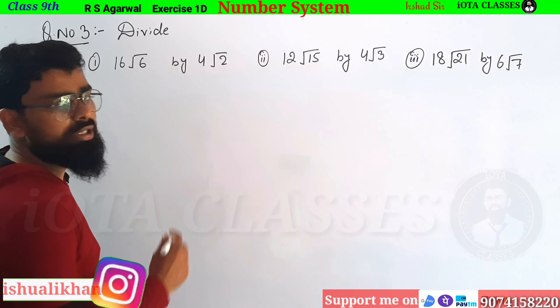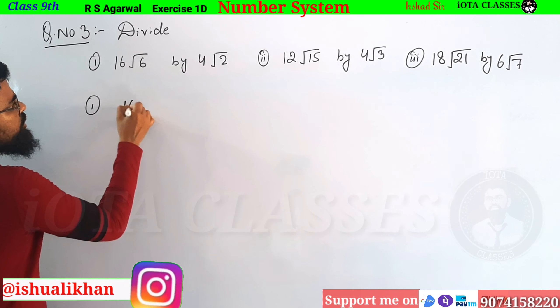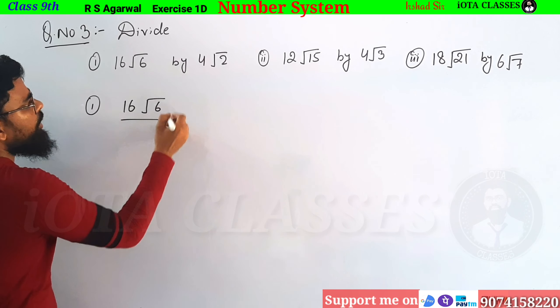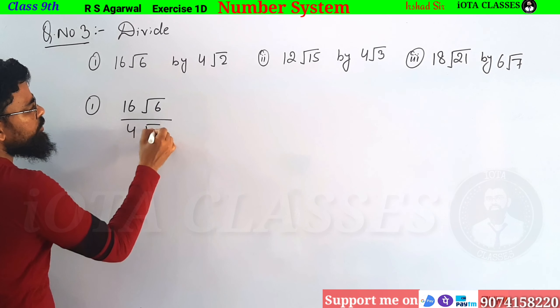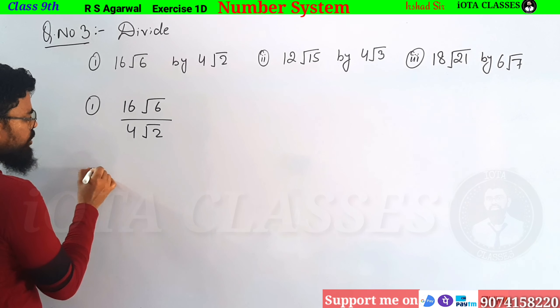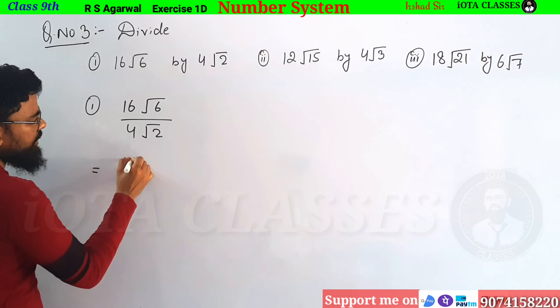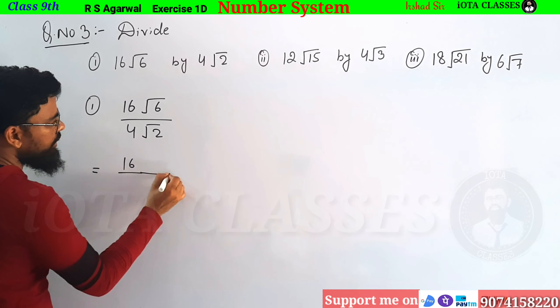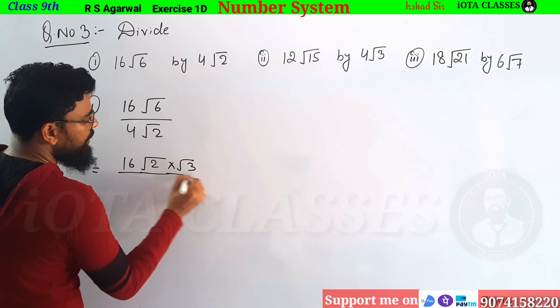How will we solve it? We are going to solve it. First I will solve this one. This is our 16 root 6 by 4 root 2. If we solve this again, what will happen? We can write root 6 as root 2 into root 3. I know root 2 into root 3 is root 6.